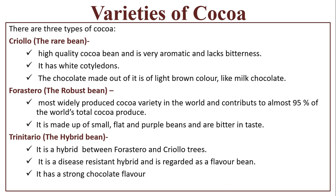There are three types of cocoa: Criollo, Forastero, and Trinitario. The first one is Criollo — the rare bean. It is a high-quality cocoa bean, very aromatic and lacks bitterness. It has white cotyledons. The chocolate made from it is of light brown color, like milk chocolate.